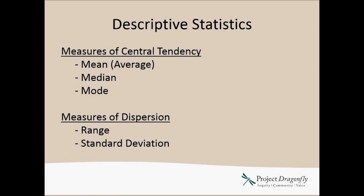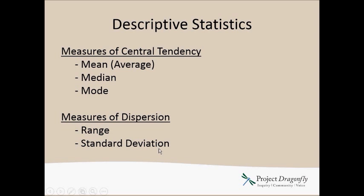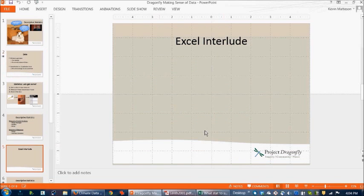You may want to review what mean, median, and mode are to refresh yourself. There are also measures of dispersion or variation around the center of the data. The way we usually summarize that is with range — which is just the minimum and maximum value in the data set — and standard deviation, which I'll talk about in just a little bit.